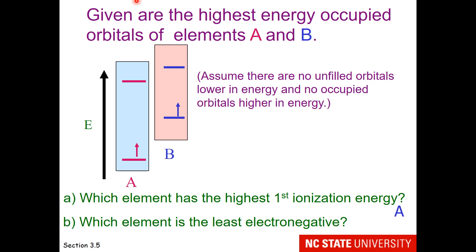This means which element is least attractive to an incoming electron. So we're going to look at the vacancies. A has a vacancy here and B has a vacancy here. And we want to know which of these two vacancies is least attractive to the electron. And I think that answer would be B because the vacancy is further away from the nucleus.